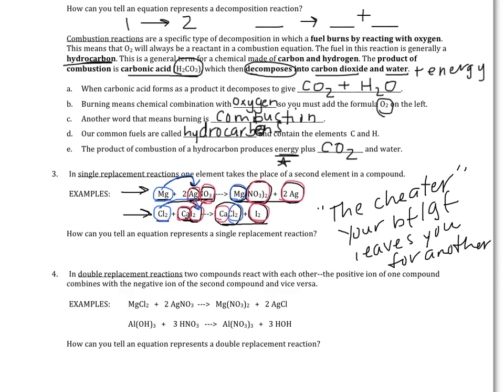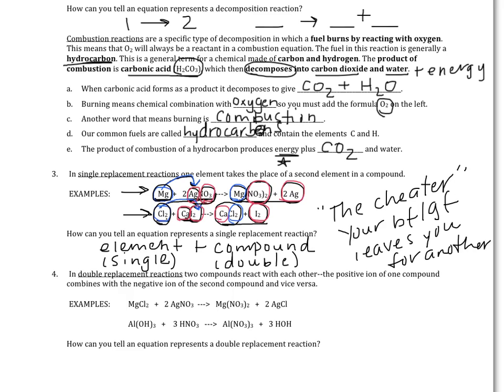So how are you going to identify a single replacement reaction? On the reactant side — the left-hand side of the equation — you see an element, a single thing like magnesium or chlorine, and you see a compound, a double made of two types of things like silver and nitrate, or calcium and iodine. If you see a combination of an element and a compound on the left, that is your signal that this is a single replacement reaction.